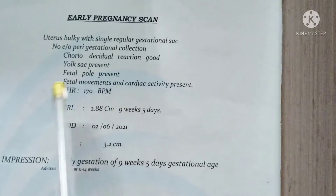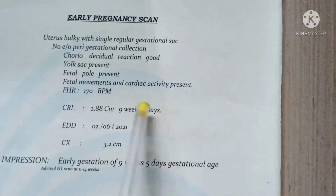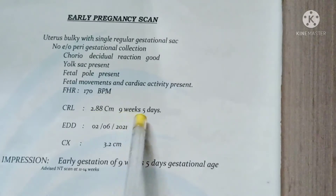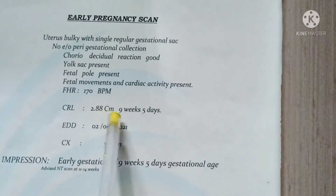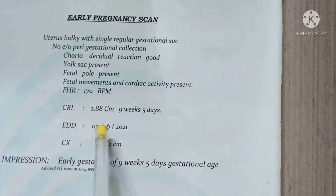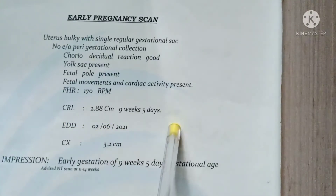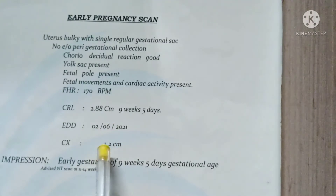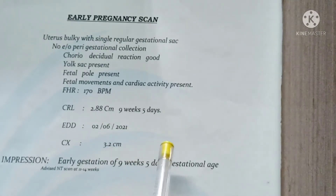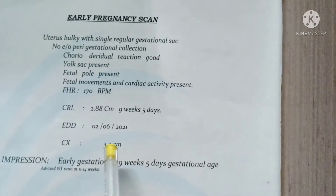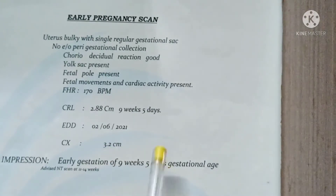CRL means the baby measurement. It means 2.88 cm, which corresponds to 9 weeks 5 days gestation.